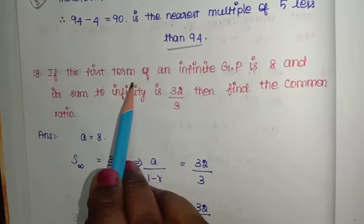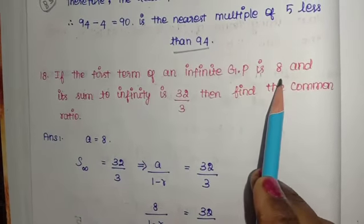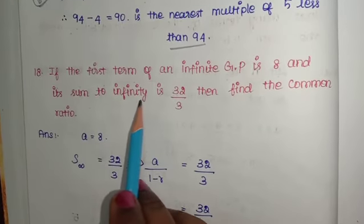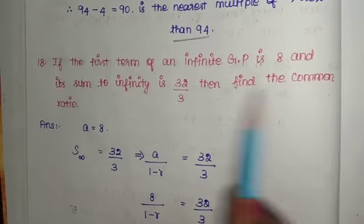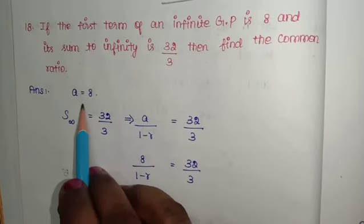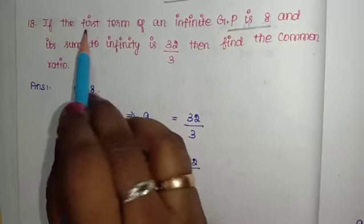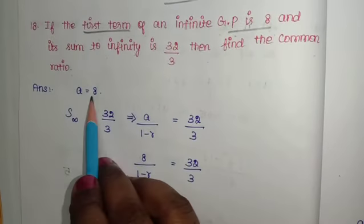If the first term of an infinite GP is 8 and its sum to infinity is 32/3, then find the common ratio. They're asking for the common ratio. The first term a is given as 8.